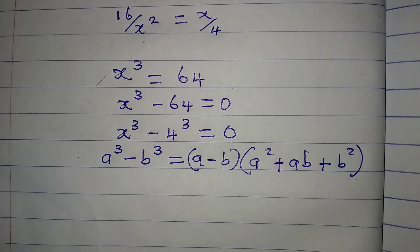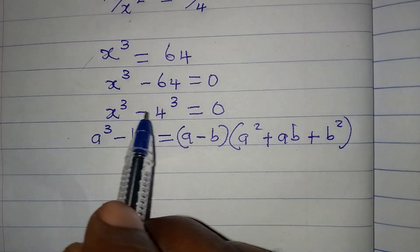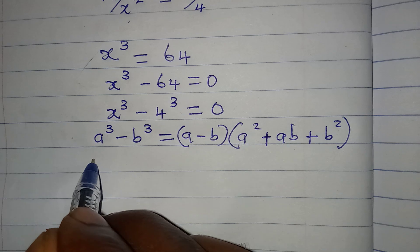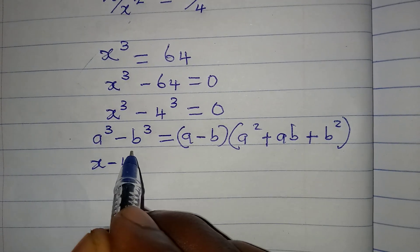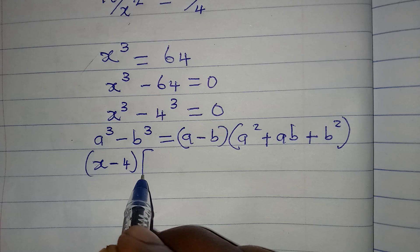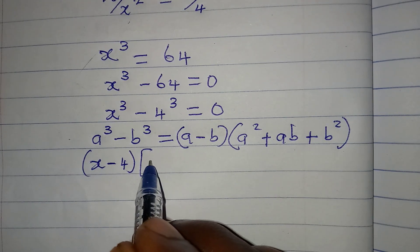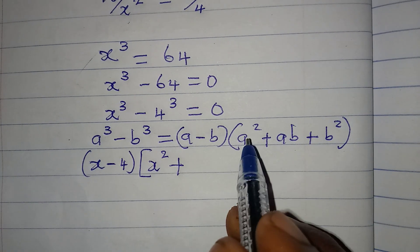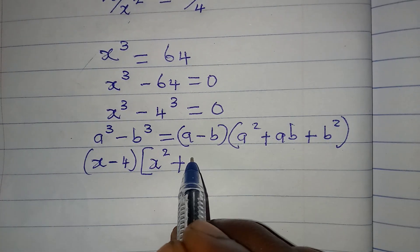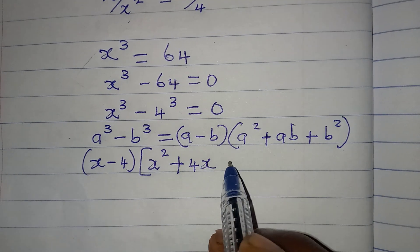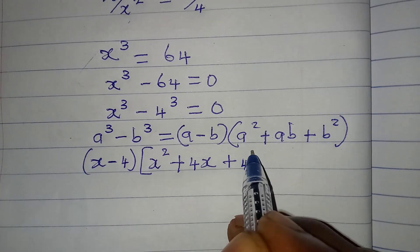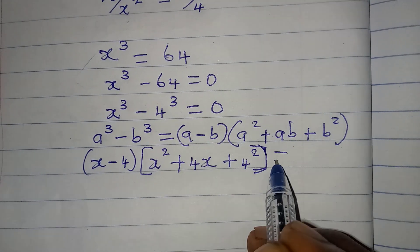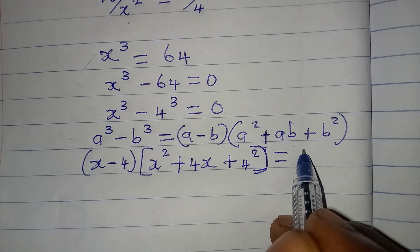I am going to apply the same principle to solve this problem. In place of a minus b, I have x minus 4. Then in the other factor I have x squared, then plus ab which becomes 4 times x — that is 4x — then plus b squared which is 4 squared, and this whole expression is equal to 0.